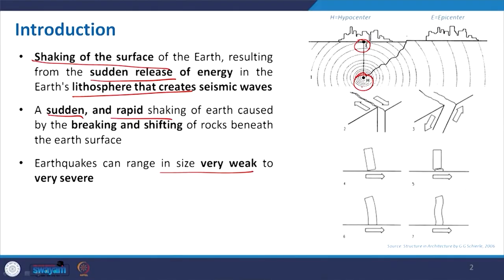Sometimes if the earthquake is very close to an urban area or the intensity is quite high — maybe more than 5 or 6 on the Richter scale — then it will definitely be havoc. This sudden and rapid shaking also happens due to the breaking and shifting of rocks beneath the earth's surface. The core of the earth is still very warm and some portions are in semi-liquid form; sometimes due to energy release, the plates overlap or slide on each other, which is the reason earthquakes generate.